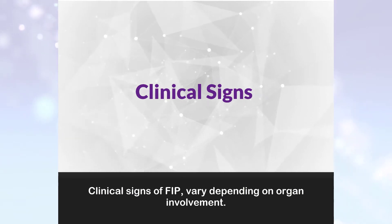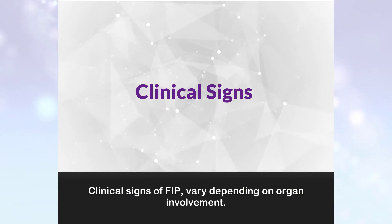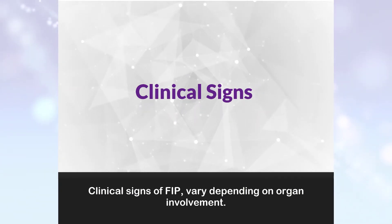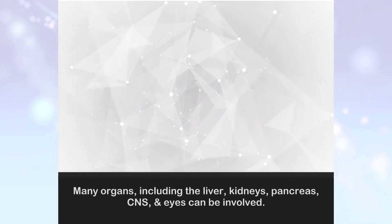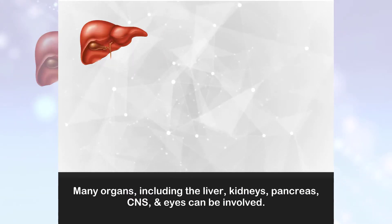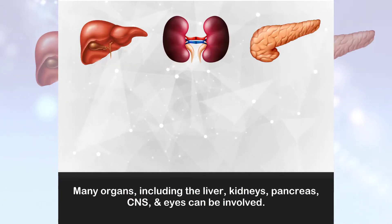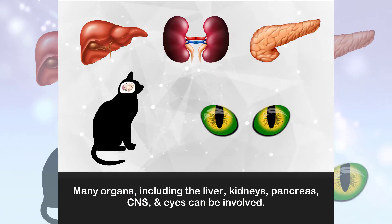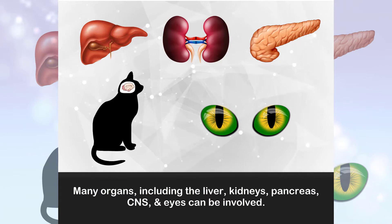Clinical signs of FIP vary depending on organ involvement. Many organs, including the liver, kidneys, pancreas, CNS, and eyes, can be involved.